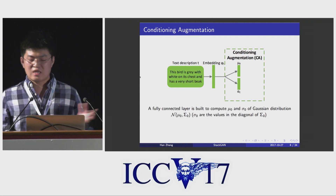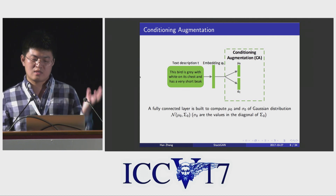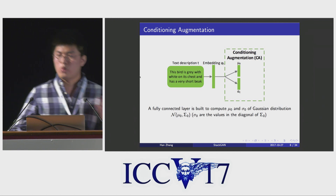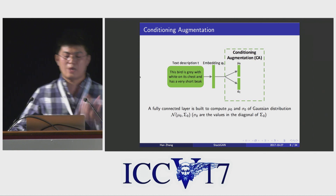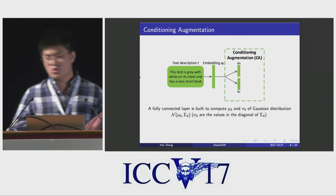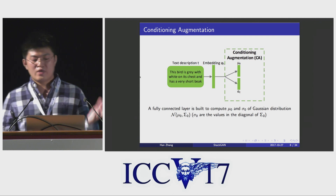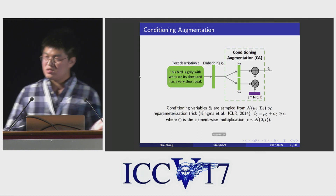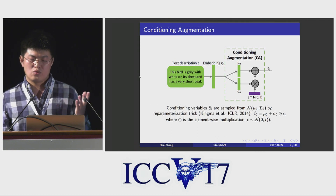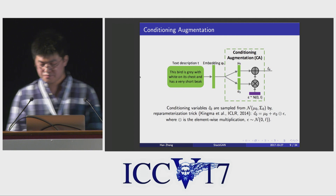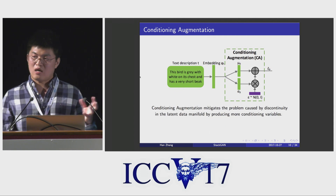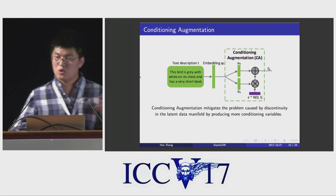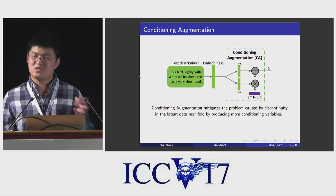Instead of directly using the deterministic text embedding, we sample the condition variable from a Gaussian distribution, where the mean and the standard deviation are both functions of the text embedding. A fully connected layer is built to compute the mean and the standard deviation, and then the condition variable is sampled using the reparameterization trick. This technique allows small perturbations along the condition manifold, thus producing more training samples given a limited amount of image-text pairs.